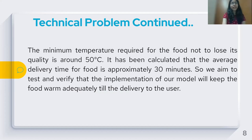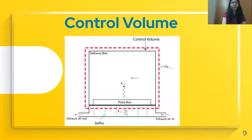The average delivery time for food is approximately 30 minutes. We aim to test and verify that the implementation of our model will keep the food warm adequately till delivery to the user. As shown in the figure, the dotted line represents the boundary of the control volume. While choosing the control volume, we have to keep in mind the modes of heat transfer.